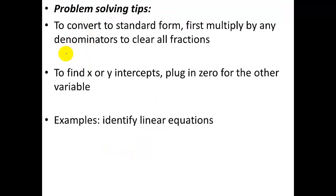Alright, problem solving tips. To convert to standard form, notice one of the rules, if you recall, was that you couldn't have any fractions or decimals. So the first thing you want to do is multiply by whatever is in the denominator, and if you have a decimal, convert it to a fraction and do this, or multiply by whatever it takes to make it a whole number. So you've got to clear out those fractions and decimals first, and then you can rearrange to do the rest of it.